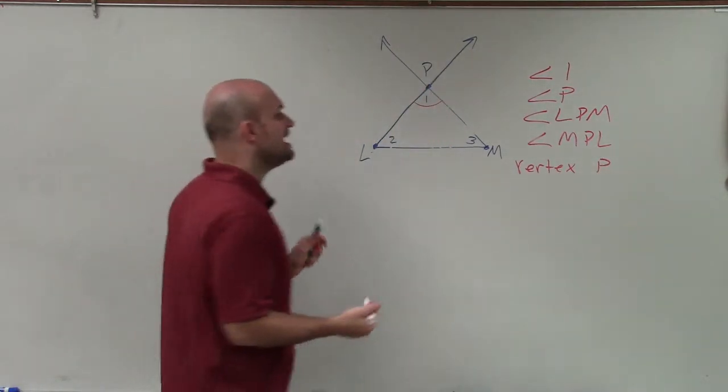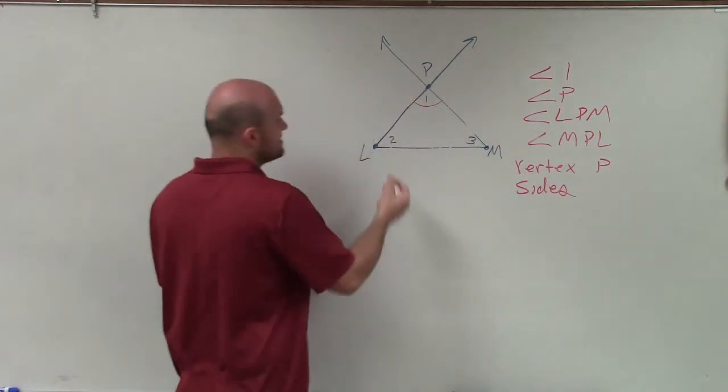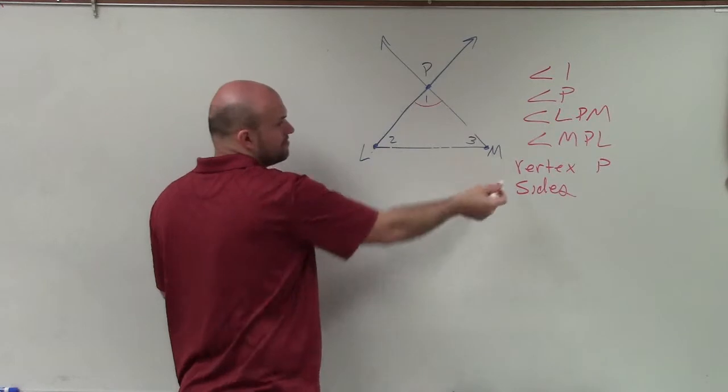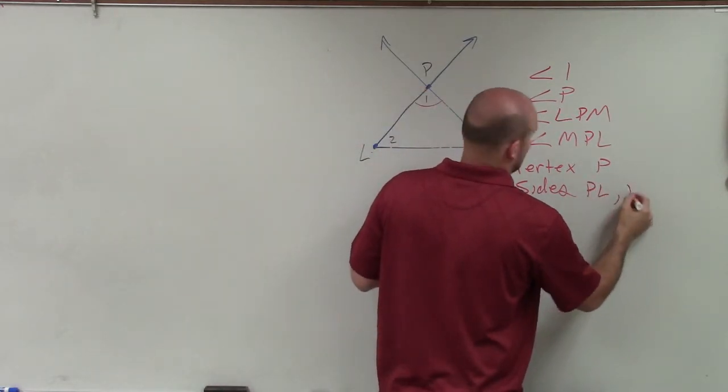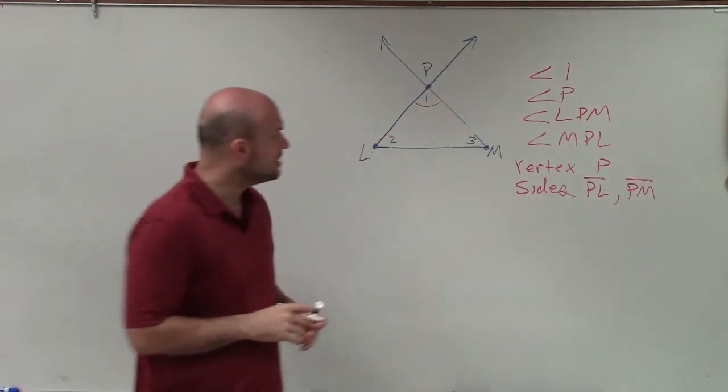And then they ask us to find the sides of that. So the sides of this angle are going to be LP and MP, or you could do PL and PM. Let's do PL and PM. And since those are line segments, I need to make sure I write lines above them.